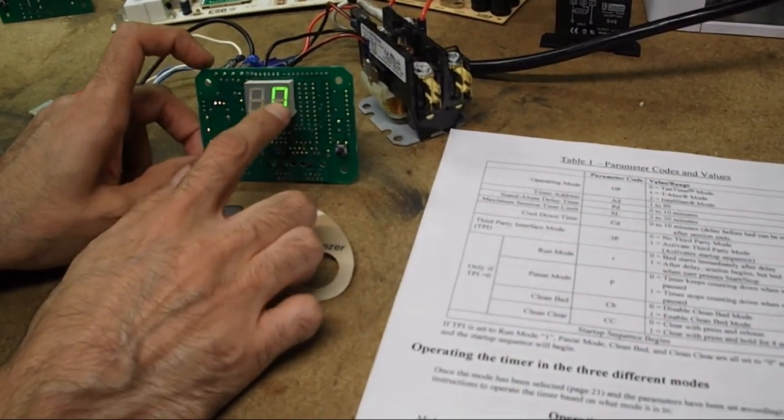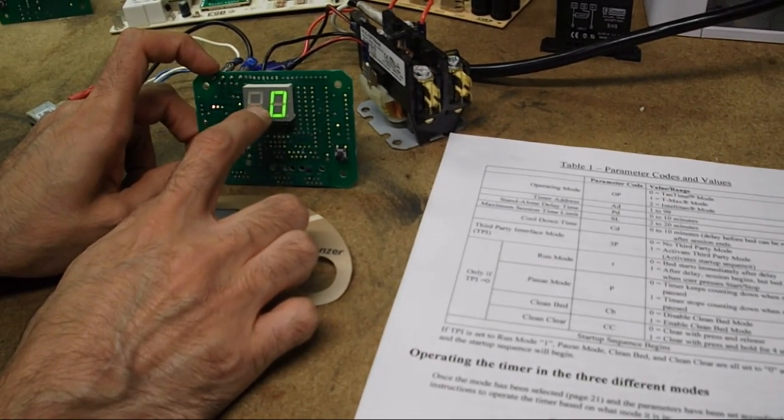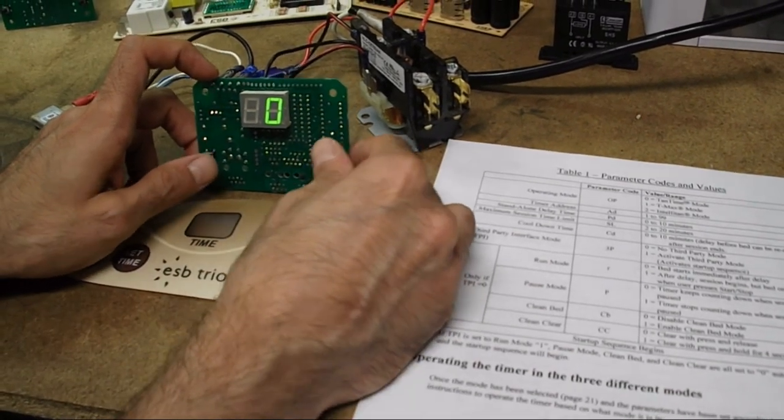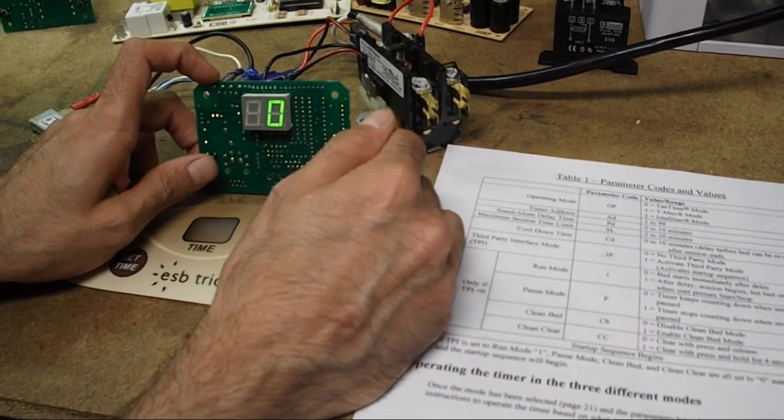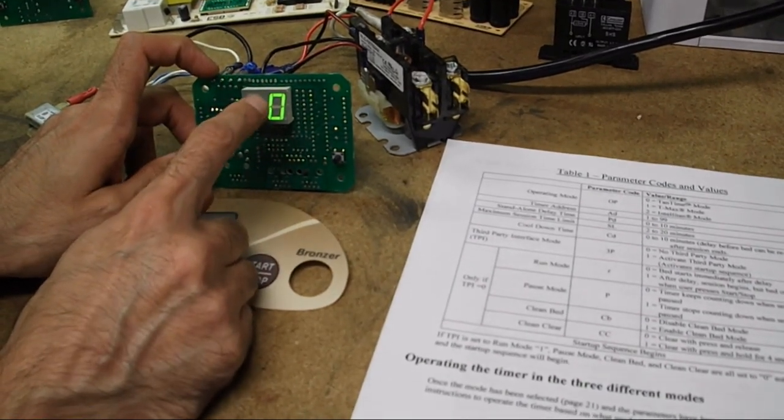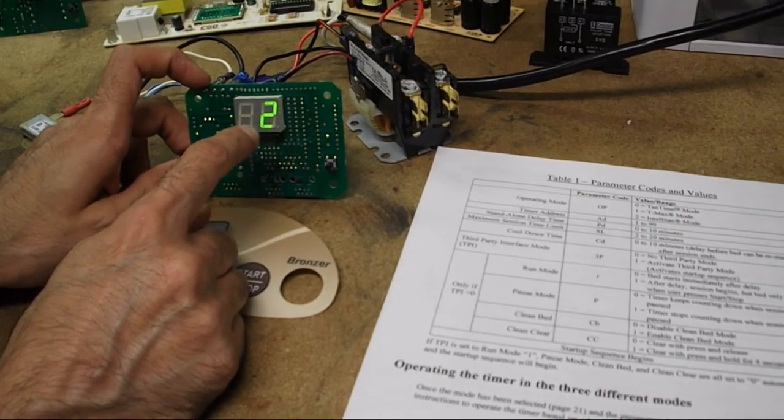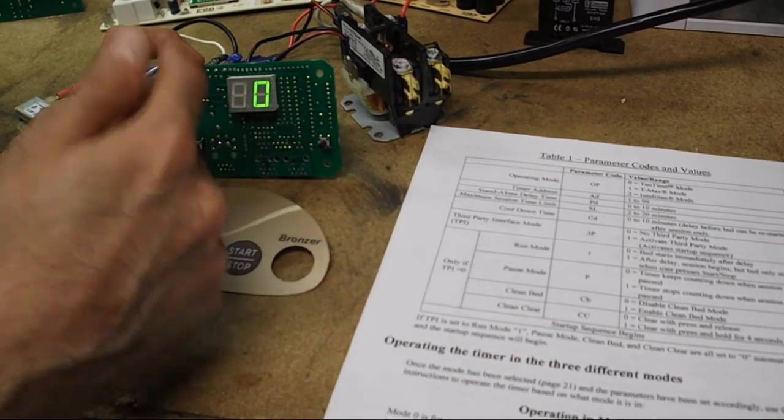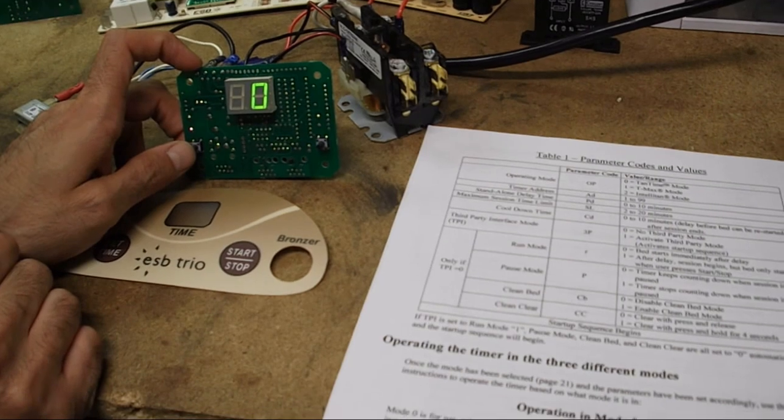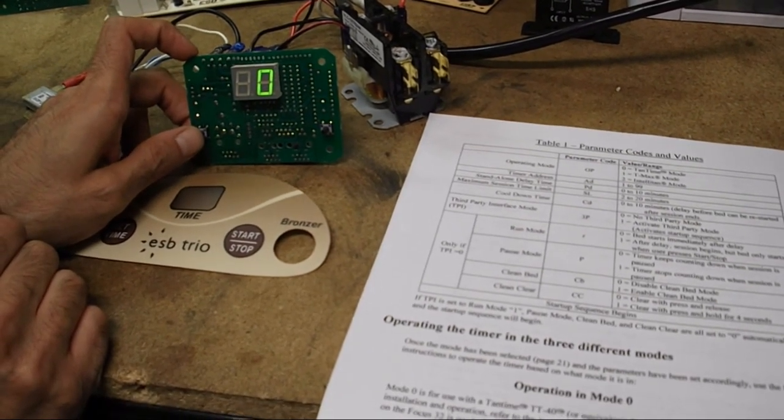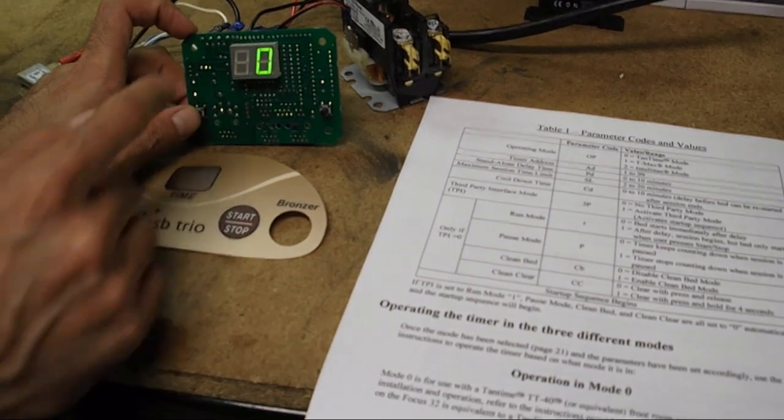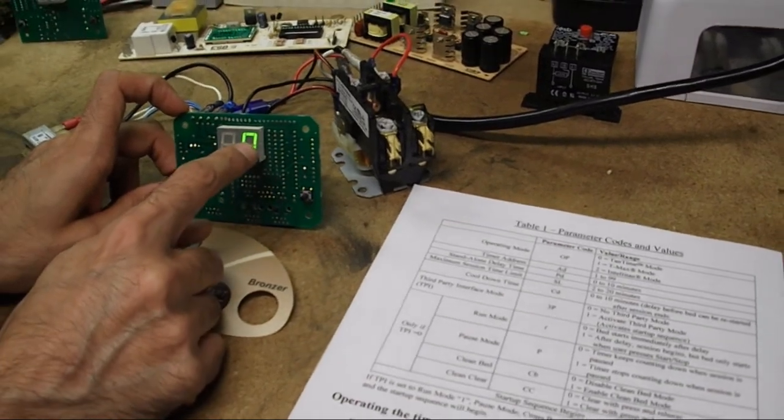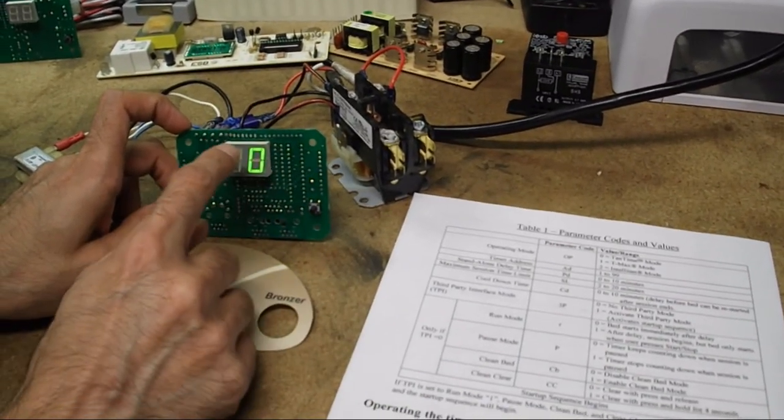The next one is 3P and it's at zero. This is the most common issue that may develop with this timer, especially if somebody mashes the buttons and they don't know about this programming procedure. They might inadvertently put the third party mode, that's what 3P is, if they put the third party mode to a mode other than zero, it locks out the timer and it's waiting for a signal from another master timer. So if you do not have a configuration where you're using a third party timer, you do not want to have it in third party mode, especially standalone beds need to be with the 3P parameter set to zero.